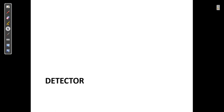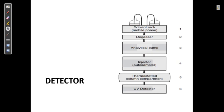Today we are going to discuss about the detector. We have seen the HPLC system — MPICD — which stands for mobile phase, pump, injector, column, and detector. Today we have reached the point where we discuss the detector. Let us see what is the use of a detector — to detect concentration.